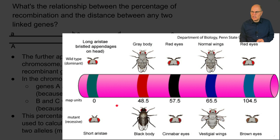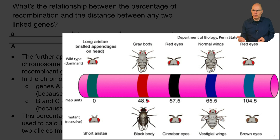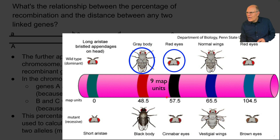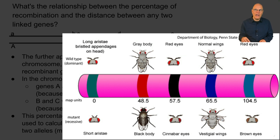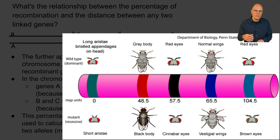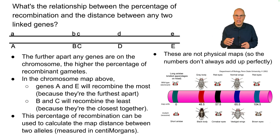On this chromosome map, the distance between long aristae and gray body is 48.5, and between gray body and red eyes it's about 9 recombination units. These units reflect the frequency of recombination. By conducting mapping experiments and breeding experiments with fruit flies, Thomas Hunt Morgan and his colleagues at Columbia University in the early 1900s were able to create maps of chromosomes, establishing that genes are on chromosomes — part of the pathway that ultimately led to the discovery of the double helix.